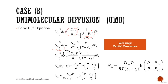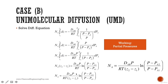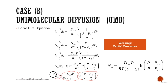Solving both sides: the left side gives (z_2 − z_1). The right-hand side integral yields the natural logarithm of (P − P_A2) divided by (P − P_A1). Total pressure is constant throughout, so it factors out. Solving for the molar flux N_A, we obtain the final equation in terms of partial pressures: N_A equals D_AB times P divided by (R·T·(z_2 − z_1)) times ln[(P − P_A2)/(P − P_A1)].